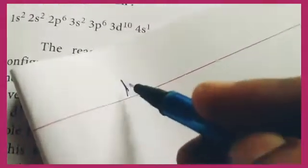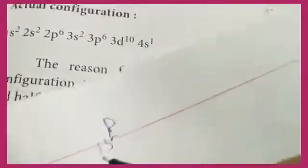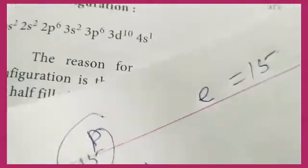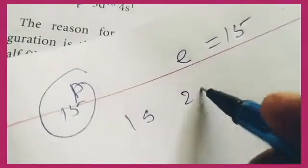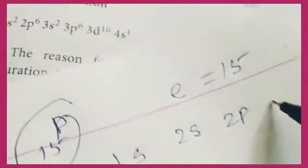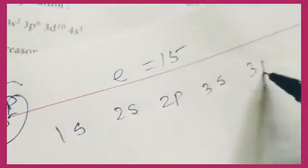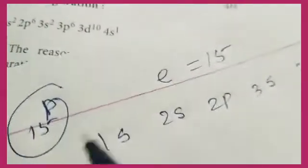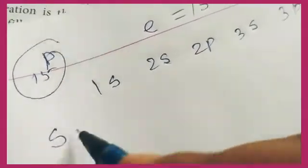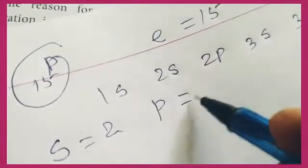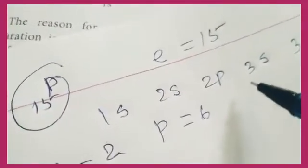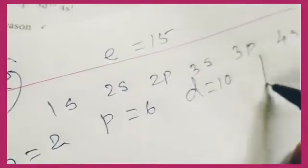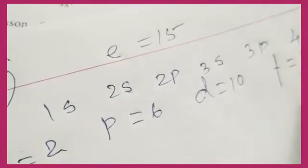Now let's work through phosphorus as an example. Phosphorus has atomic number 15, which means it has 15 electrons. The order of filling is: 1s, 2s, 2p, 3s, 3p, 4s, 3d. For s orbitals, 2 electrons; for p, 6 electrons; for d, 10 electrons; for f, 14 electrons.